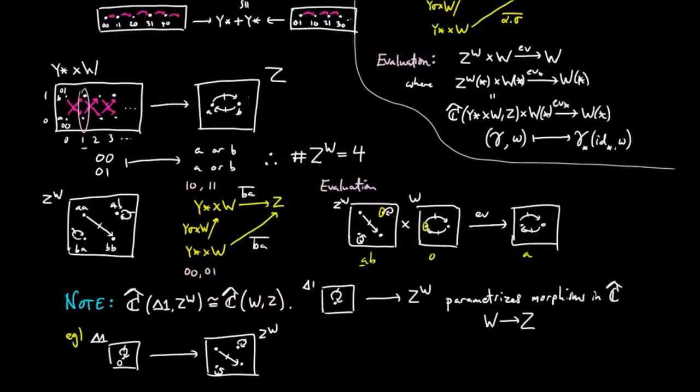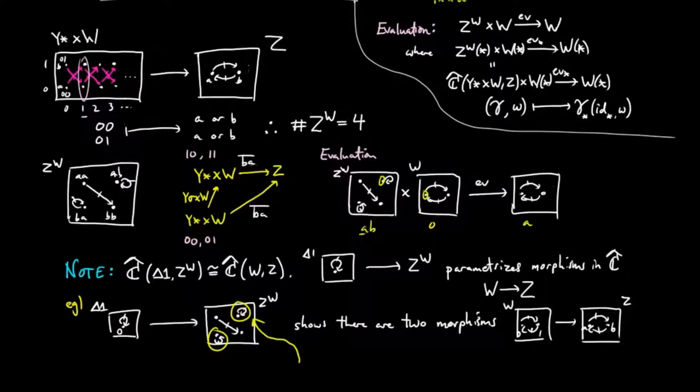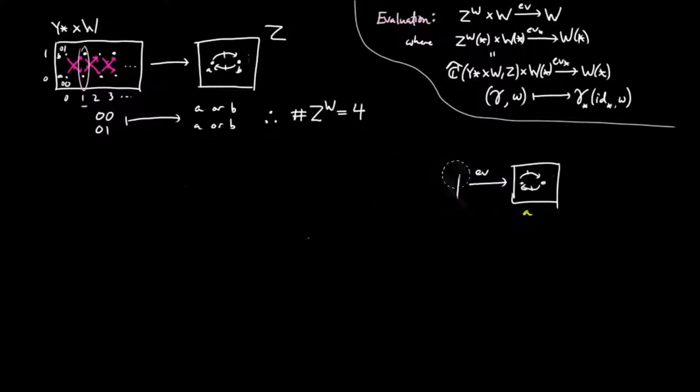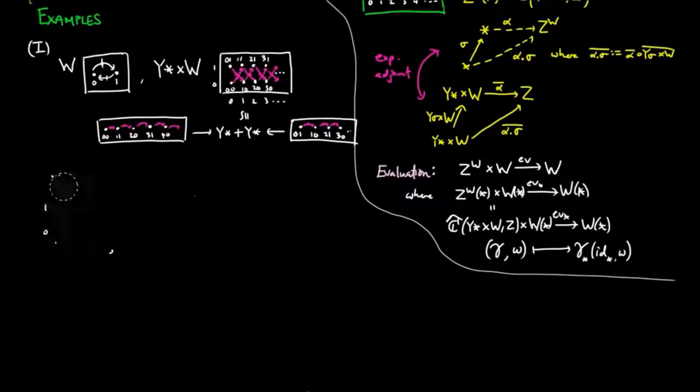So for example, there are two fixed points in the exponential object Z to the W above, corresponding to the two evolving set morphisms from W to Z. There's one morphism which sends 0 to A and 1 to B, and the other which sends 0 to B and 1 to A. In the previous example, there was only one morphism from W to Z which sent both 0 and 1 to B, hence only one fixed point in the exponential object.